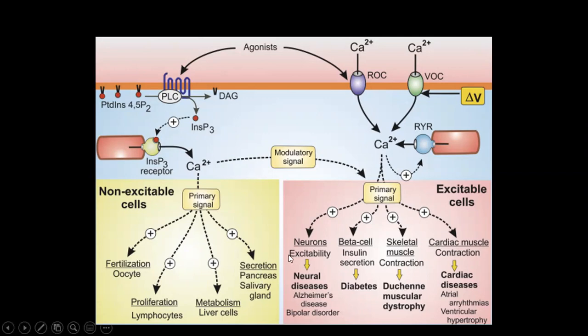But what happens is, if there is a change in the transient, which we will see in the following slides, when there is a change in this calcium regulation, it causes several diseases. For example, the neural disease is Alzheimer's, bipolar, and then diabetes, and then cardiac disease.